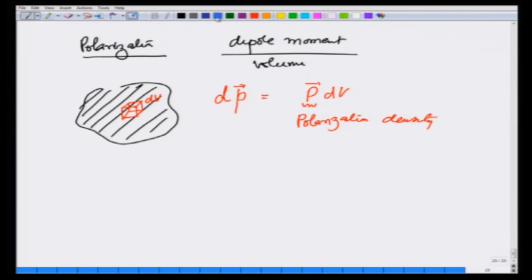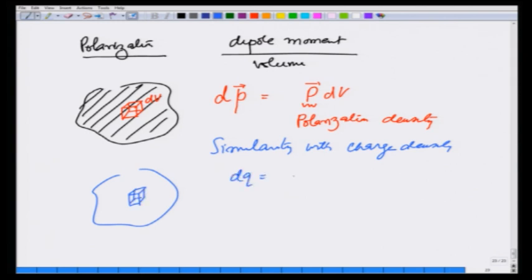See the similarity with charge density. In charge density, if I have a small volume then small infinitesimal charge in this volume was nothing but charge density times dv. So in the same manner I have polarization density p.